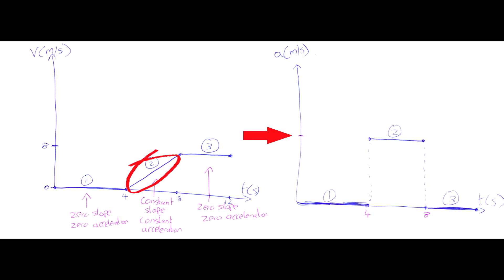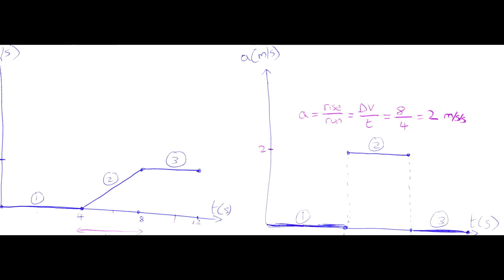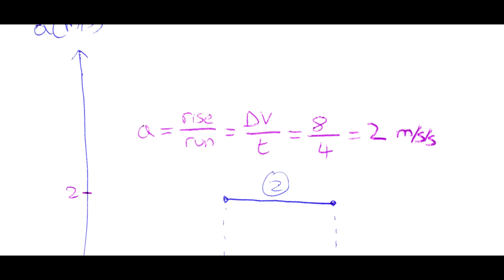The slope of this velocity graph — which is the acceleration — equals rise over run, which in this case equals the change in velocity divided by time: 8 meters per second divided by the period of time over which that change happens. It happens between 4 and 8 seconds, so 8 minus 4 is 4 seconds. 8 over 4 gives us 2 meters per second per second. So we can mark this acceleration of 2 m/s² on our acceleration-time graph, and now every important number on the graph is marked.